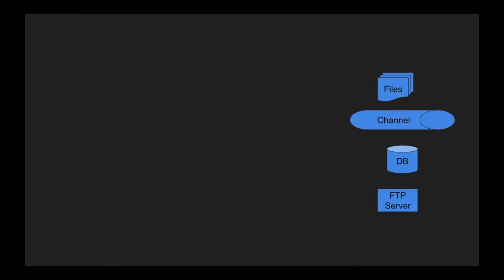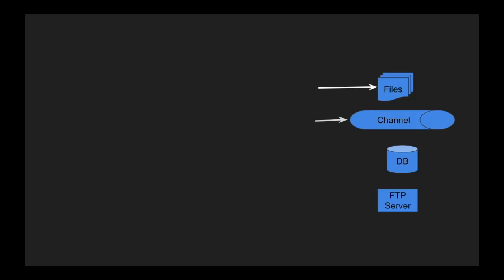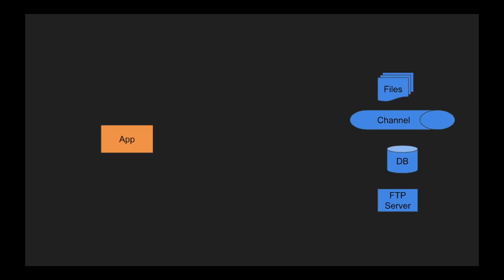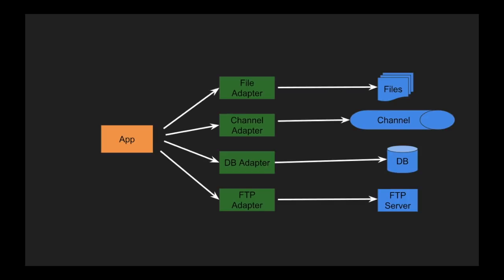The different data sources we deal with include file systems, messaging queues, messaging channels, databases, FTP servers, SFTP servers, or object stores. These are different data stores where we collect and persist data. To connect an application to these data stores, we create adapters — a file adapter for file data stores, messaging adapters for messaging data stores, and so on. What if all these adapters were available out of the box? That is what Spring Integration is all about.